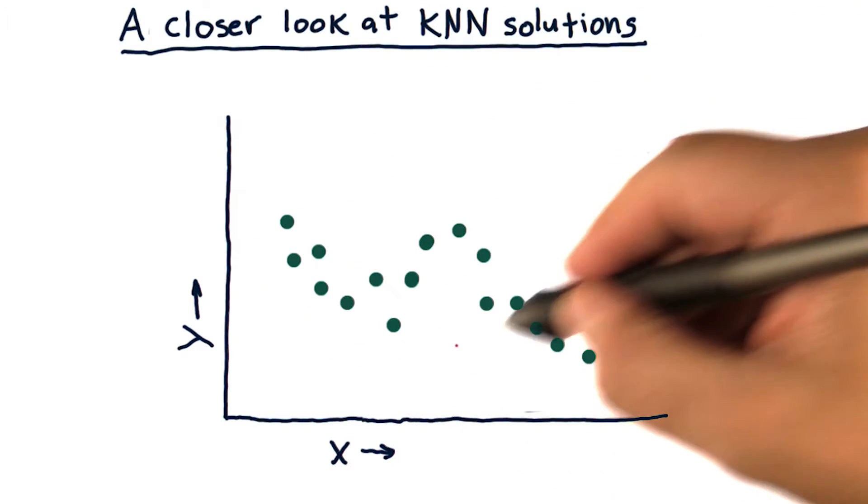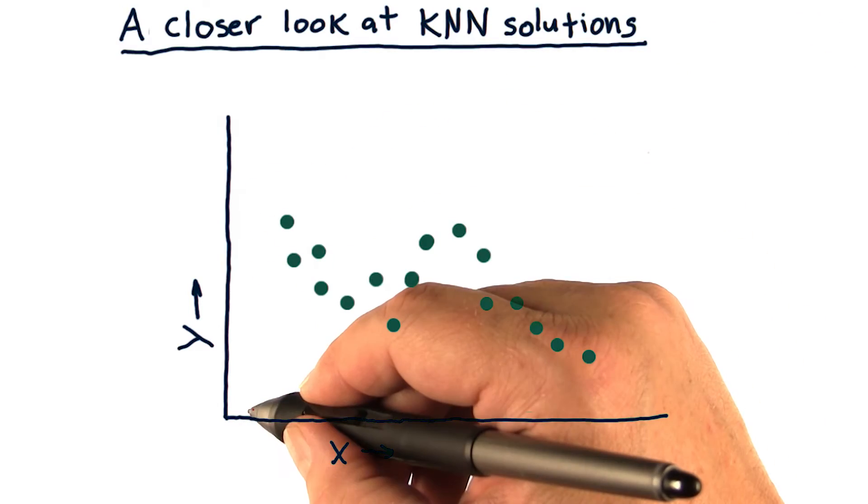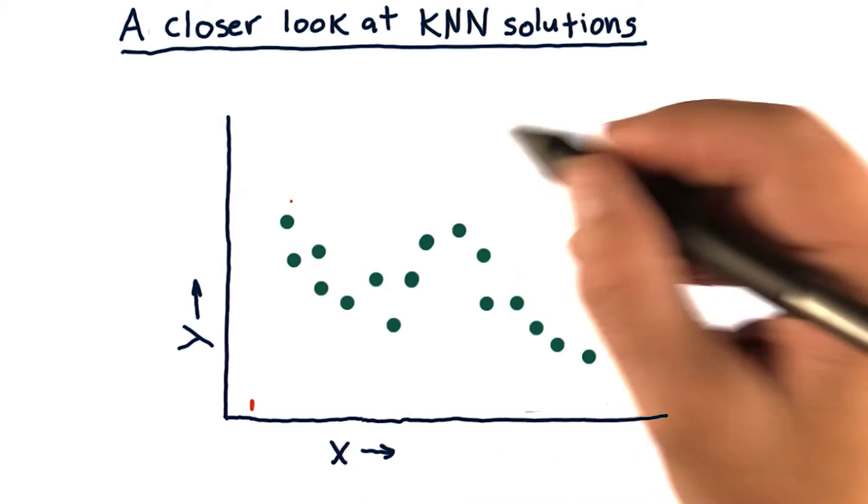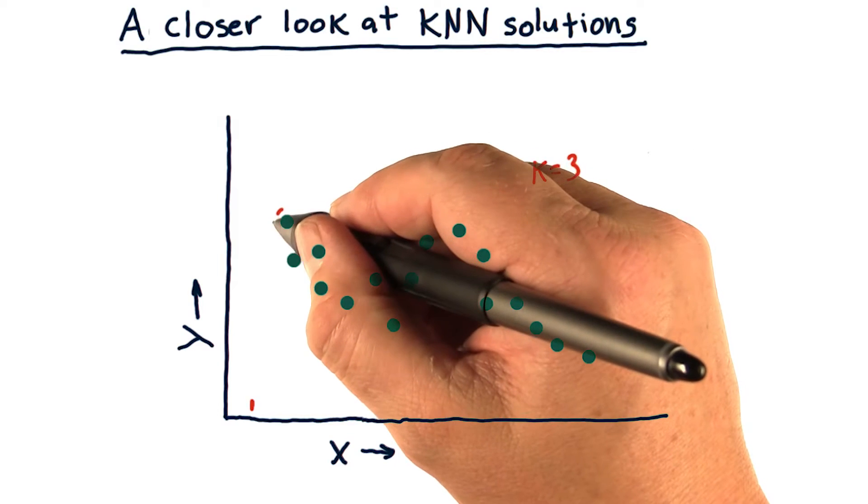Let's suppose we were going to query this KNN model over in this region, right here at this point. The nearest three, let's use k equals three here. The nearest three are going to be these.